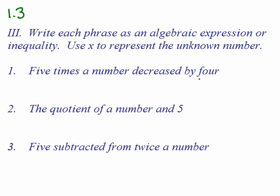For instance, if you weighed 100 pounds and you decreased it by 4, you'd be down at 96. So we have to start off with 5 times a number — the number is x — so that will be 5x, and then we're going to decrease it by 4, so we subtract 4. The answer is 5x minus 4. Next one: the quotient of a number and 5.